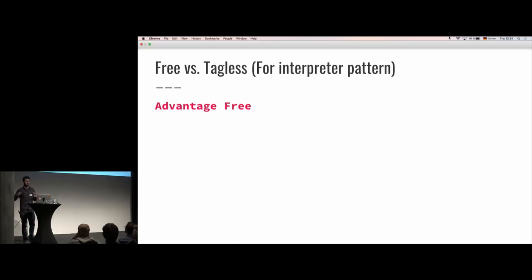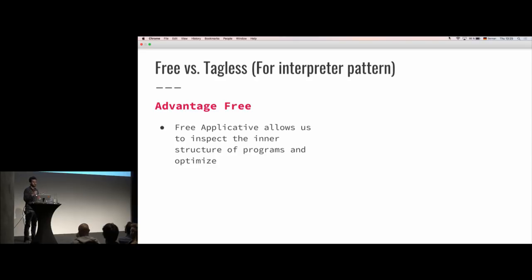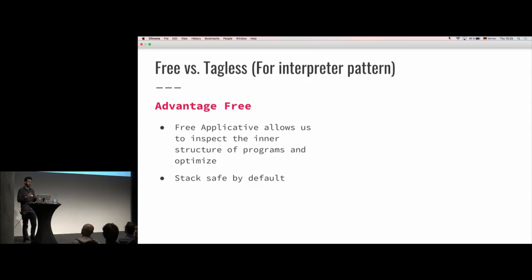First up, we have the things that are advantages for the free monad — free monad and free applicative. Free applicatives allow us to inspect the inner structure of these applicative programs, which allows us to optimize certain things. That is a really powerful thing to have, and it works because free applicative is a data structure — we can look inside it, and it doesn't have any functions where we can't look inside like the free monad. Also, you have stack safety by default. If you were to use a tagless final program and interpret it into a non-stack-safe monad, you could get stack safety issues.